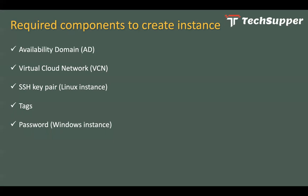You also need a password if you are creating a Windows instance. Image is a very important element — when you create a compute instance you need to select an image, meaning what type of operating system you require. The image gives you a predefined operating system with other software already installed. Then there is Shape — you need to choose a shape, which determines the allocated CPU, memory, and other resources. You need to choose image and shape wisely as they affect cost.